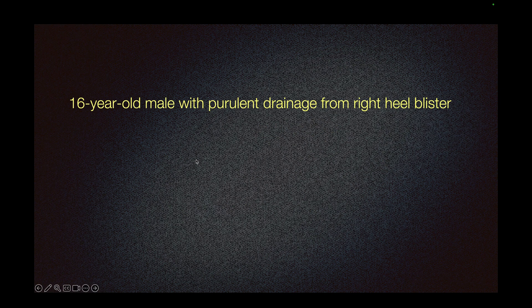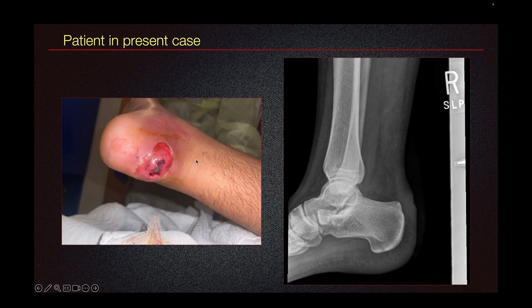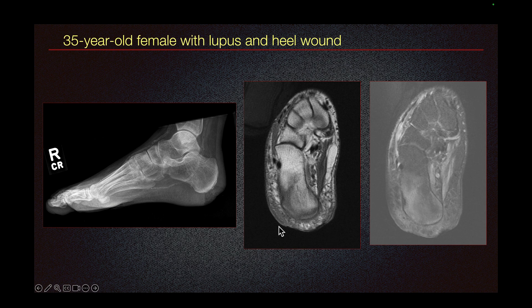We have a case of a 16-year-old male with purulent drainage from right heel blister. Here is the image of the wound. On radiograph on the right, we see the heel ulcer. There is no obvious erosion of the underlying bone to suggest osteomyelitis. However, x-rays are insensitive for detection of osteomyelitis — MRI is the most sensitive.